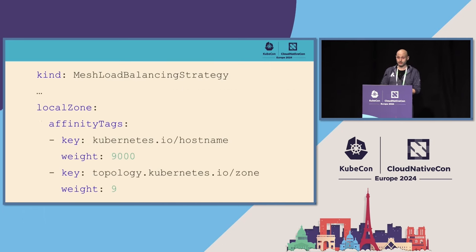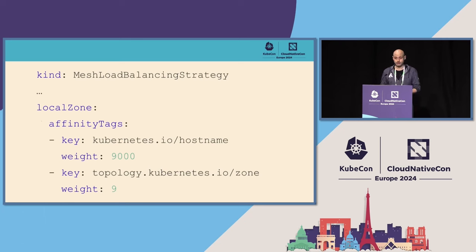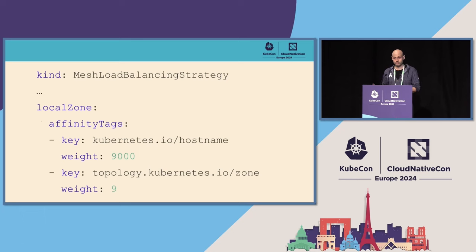The next thing I want to talk about is a new policy that we introduced called mesh load balancing strategy. It allows fine-grained control over how the routing is done inside your zone and across zones. The first part of mesh load balancing strategy is called local zone, and under there you have affinity tags. Based on those tags and the weight you assign, you decide how much traffic goes to which workloads with the same value of a particular tag. In this case, 99.9% of the traffic will go to the workloads with the same kubernetes.io/hostname tag.